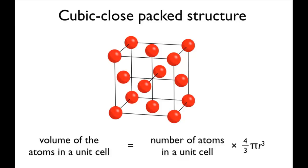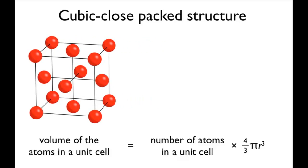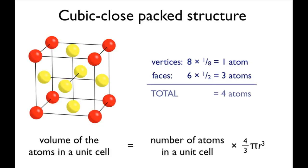How many atoms are there in a unit cell of the cubic close packed structure? Looking at this structure, you can see there are eight atoms on the vertices. Each of these atoms are shared equally between eight unit cells, so contributes an eighth to each. There are also six atoms on the faces. These are shared equally between two unit cells, so contribute a half to each. This means that overall there are eight times one eighth plus six times a half, which is equal to four atoms in the unit cell.